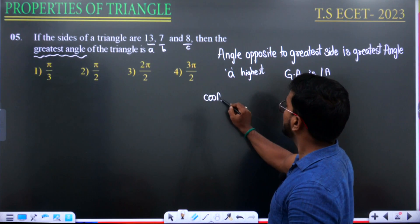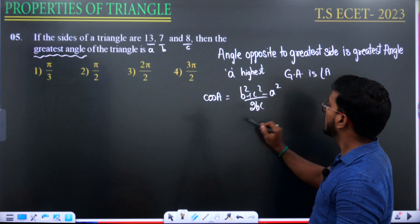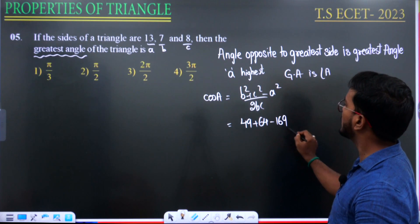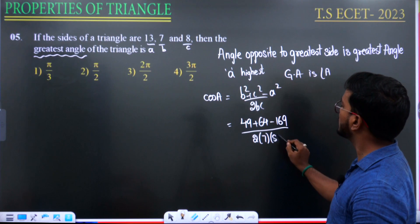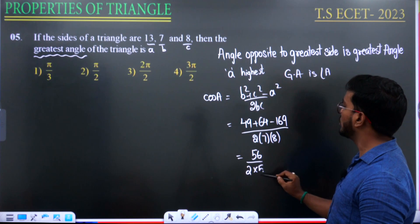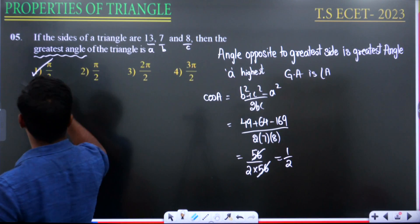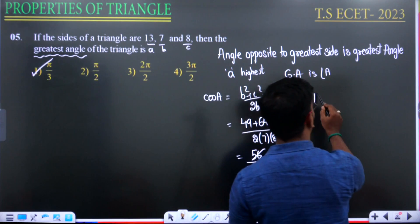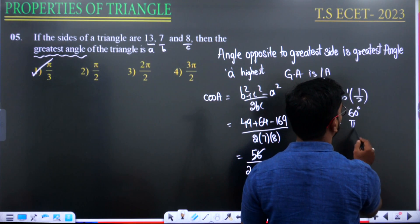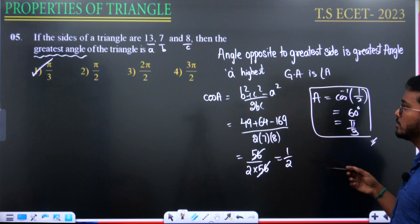Applying the cosine rule: cos A = (b² + c² − a²) / 2bc = (49 + 64 − 169) / (2 × 7 × 8) = −56 / 112. Wait — solving this correctly: (49 + 64 − 169) / 112 = −56/112 = −1/2. Actually the numerator simplifies and we get cos A = 1/2, giving A = cos⁻¹(1/2) = 60° = π/3. This is the TSE answer for 2023.